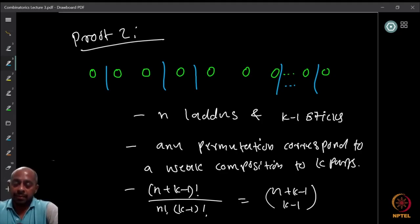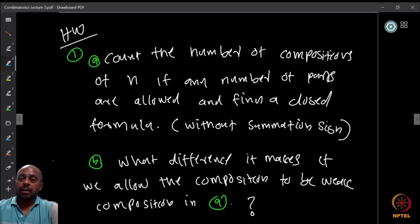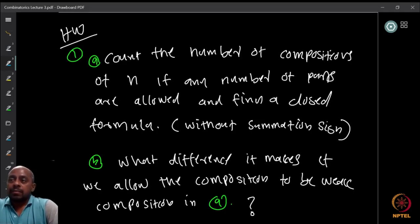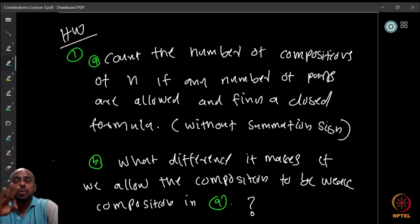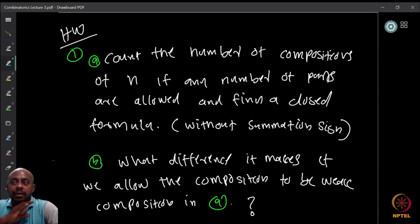So we have a second proof. Now here are some further questions. First: count the number of compositions of n if any number of parts are allowed — that is, k is arbitrary, it can be 1, 2, 3, etc. Can you find a closed-form formula for this?